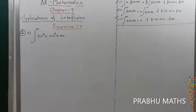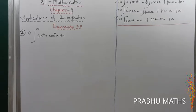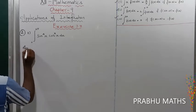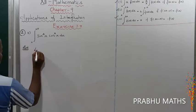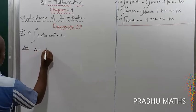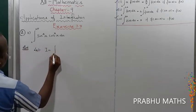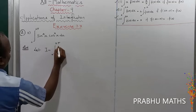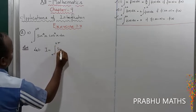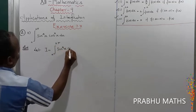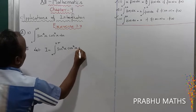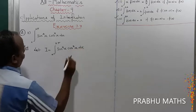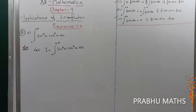Let us consider I equal to the integral of 0 to 2π of sin⁴(x) cos³(x) dx. We will solve this using a standard formula.